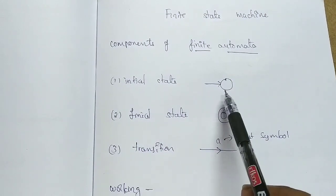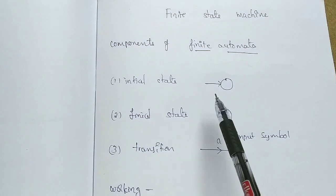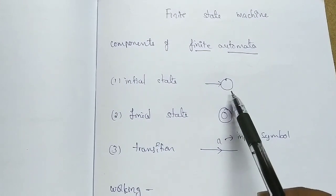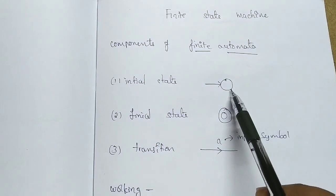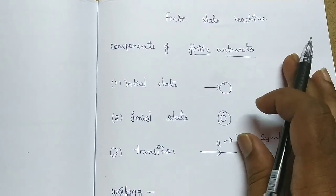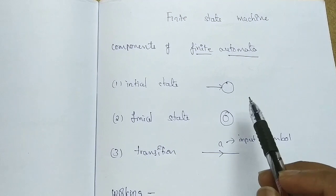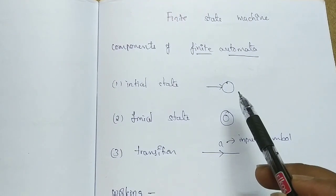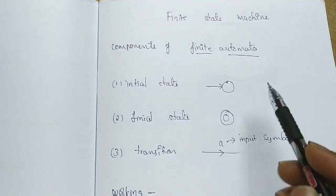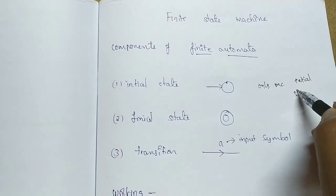There are three things in the finite automata: one is states, another is transitions, and another is input symbols. We design finite automata in a certain way. The first kind of state is called the initial state. In a finite automata and other updated versions, there is only one initial state, because every transition of a finite state machine will start with the initial state. If we have two initial states it causes ambiguity, so we have only one initial state.